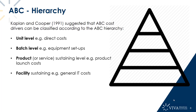Finally, we have facility sustaining activities. These are just the general fixed costs of a business — costs which can't be related to unit level, batch level, or product level. A useful approach: if you've gone through the list and it's not unit level, not batch level, not product sustaining, then it's likely a facility sustaining activity. The ABC hierarchy is a useful way to think about activities and their associated cost drivers.